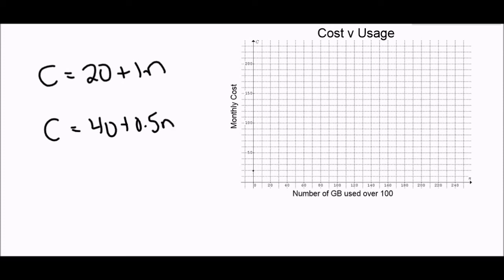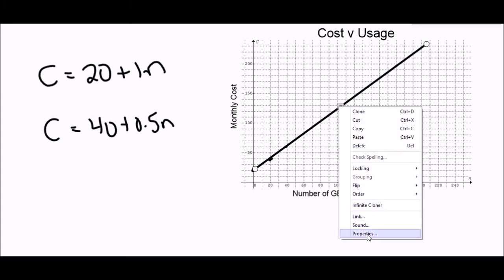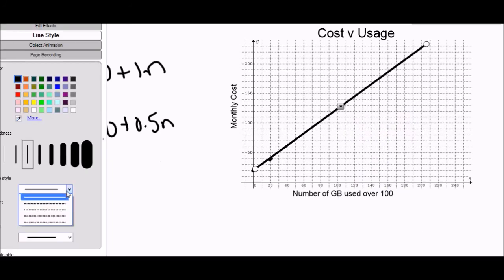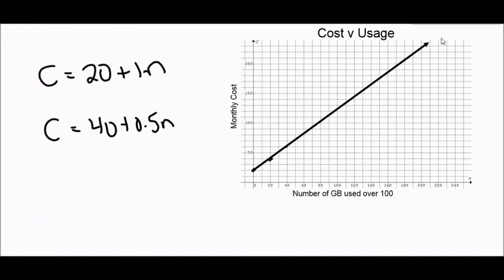So the first one starts at 20. And then every gigabyte used over 100 costs me a dollar. So if I use 20 gigabytes extra, I need to pay $20 extra. Right about here. If I use another 20, I need to pay another $20. And so on. So that would create a line. Let me grab my line tool here. So that would create a line. Let's see if I can line this up nicely. Like this. And using my fancy tools here. I can be really smart. I'm going to put an arrow on the end of that line. Because that's what we do. Maybe you're going to use more than that.